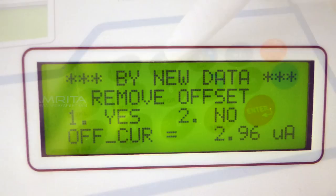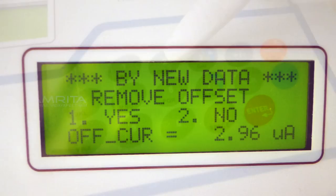If offset is present, remove the offset current by pressing yes. After scanning, choose the print option to generate the corresponding results.